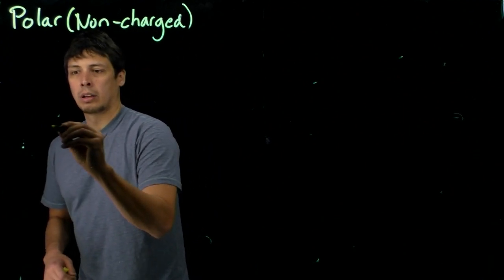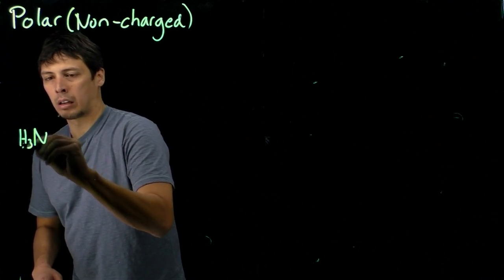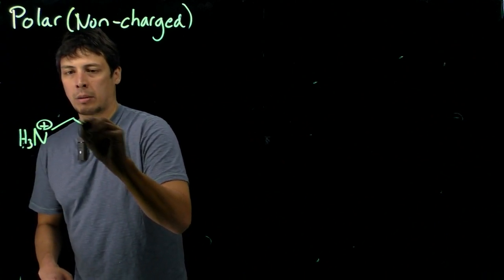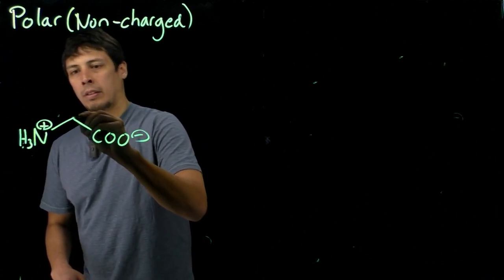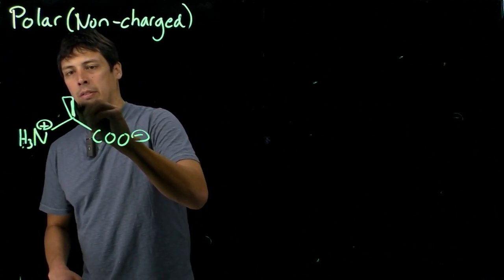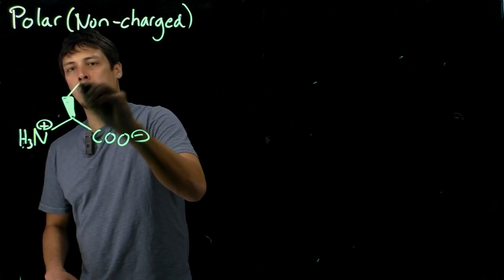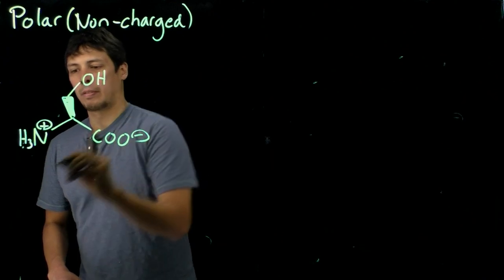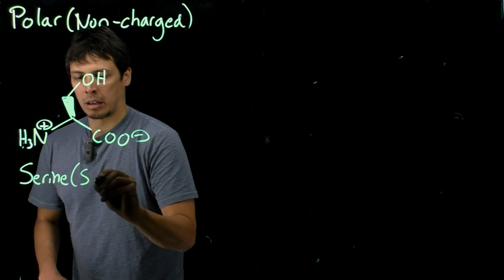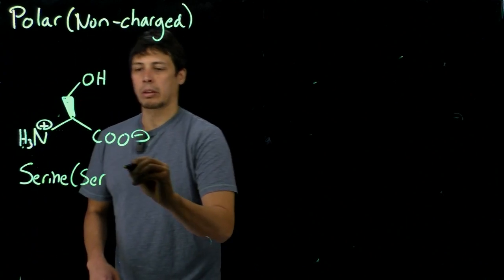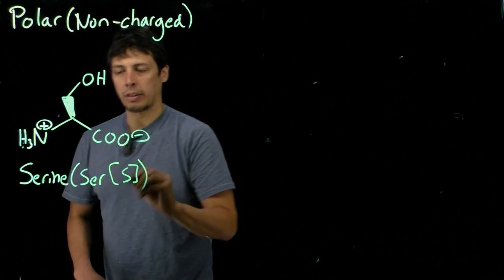So the first two have hydroxyl groups on them, so alpha amine plus alpha carbon, C alpha carboxylate, wedge for stereochemistry, and then at the end of this bend is an OH group. This is called serine, which has a three letter code of SER and a one letter code of S.